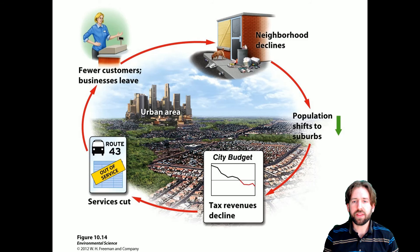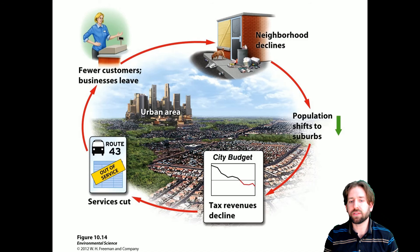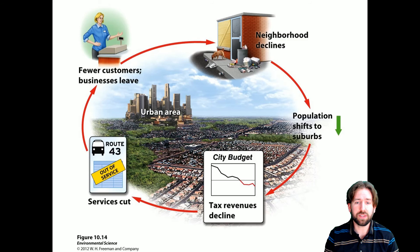In this diagram, we see how urban blight can operate. If the population starts to shift to the suburbs, your city budget is going to decrease — tax revenues decline, which means you'll have less services. Less money means you can do less for that area. Since services are going to be cut, you'll have fewer customers and businesses are going to leave. And because all of these people are leaving and businesses leave, you're going to have the neighborhood declining — less money, less taxes, less services — all these things perpetuate. Then population shifts further and you get even less tax revenue. So it continues and continues — this is the cycle of urban blight.